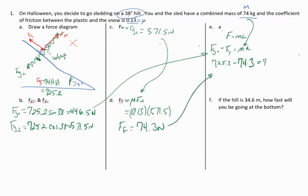Subtract the two of those, divide by your 74, and you get an acceleration down the hill of 5.03 meters per second squared.